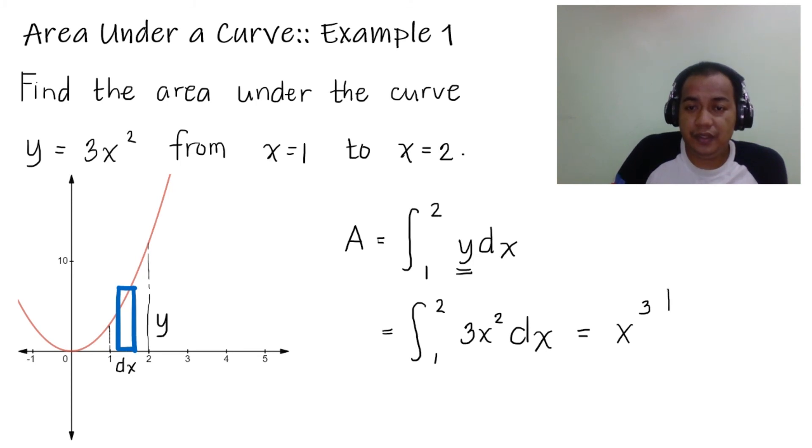And then, we need to evaluate this one from x equals 1 to x equals 2. Applying the fundamental theorem of calculus, this is 2 raised to 3 minus 1 raised to 3. 2 raised to 3 is 8, 1 raised to 3 is 1, so 8 minus 1 is 7.